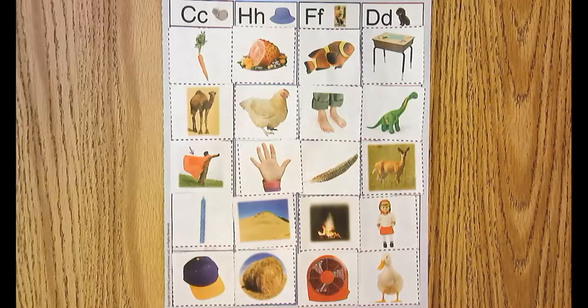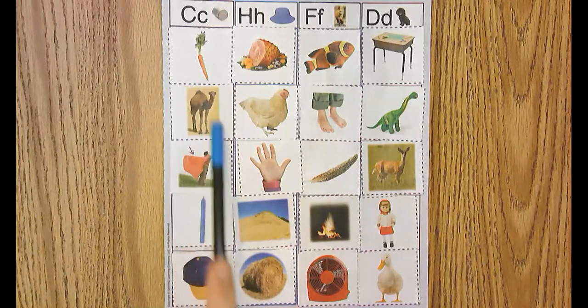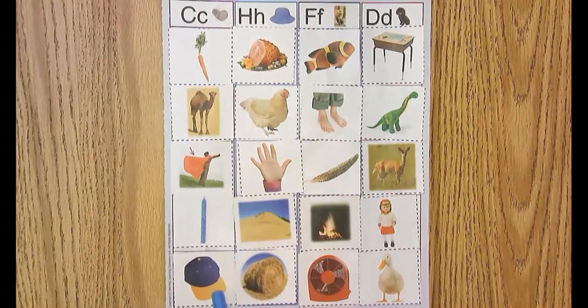In the column c, we have carrot, camel, cape, candle, and cap.